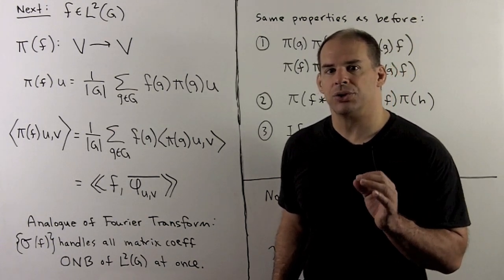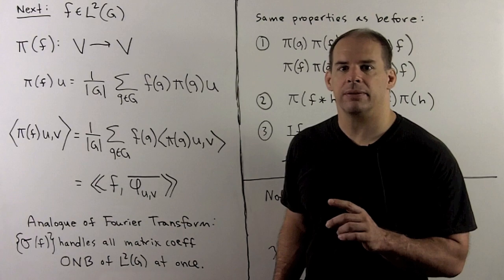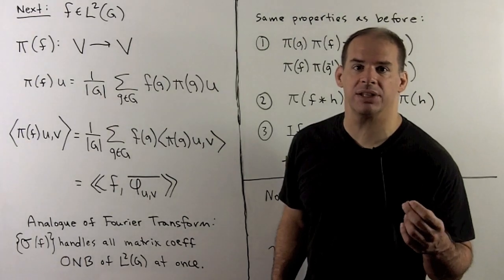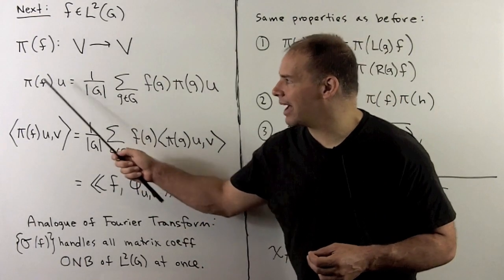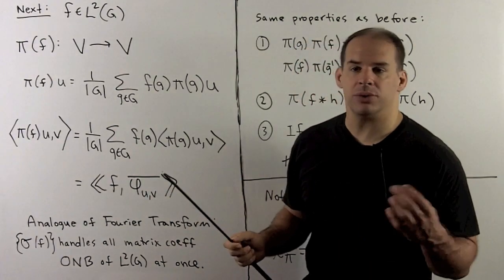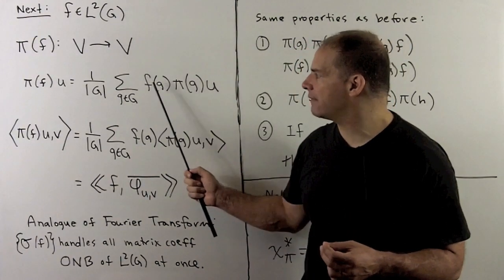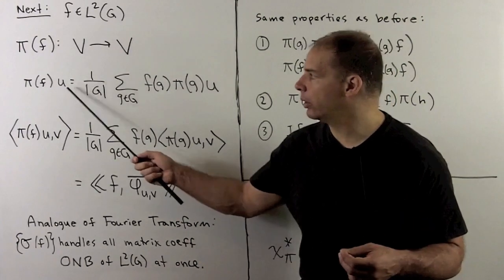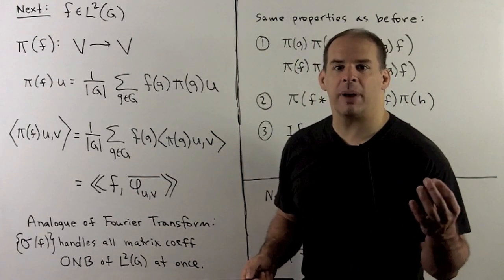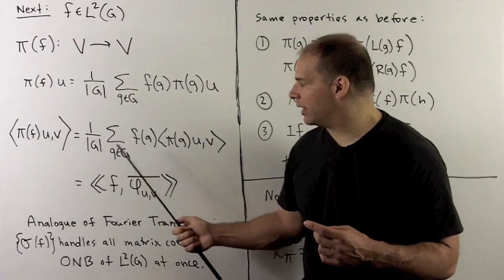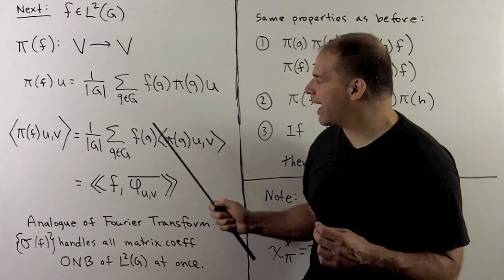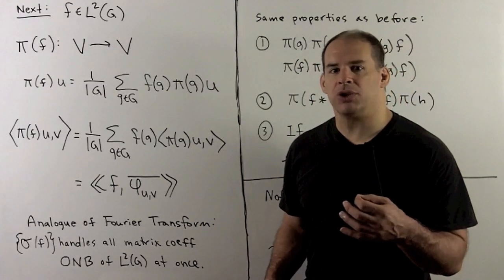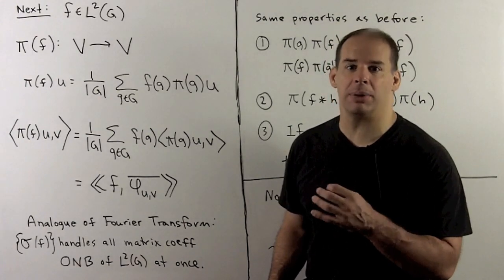If f is in L2(G), we can form the weighted average of the representation using f. This is a linear transformation pi(f) carrying V to V — we have seen this before in the finite abelian case. For the definition, if we apply pi(f) to u, we take the weighted average of the representation pi by the function f and apply it to u. We could define pi(f) without reference to u. If we take the inner product of pi(f)(u) with a vector v, we can move everything to the outside of the inner product. Then we have the L2 inner product of f with a matrix coefficient.